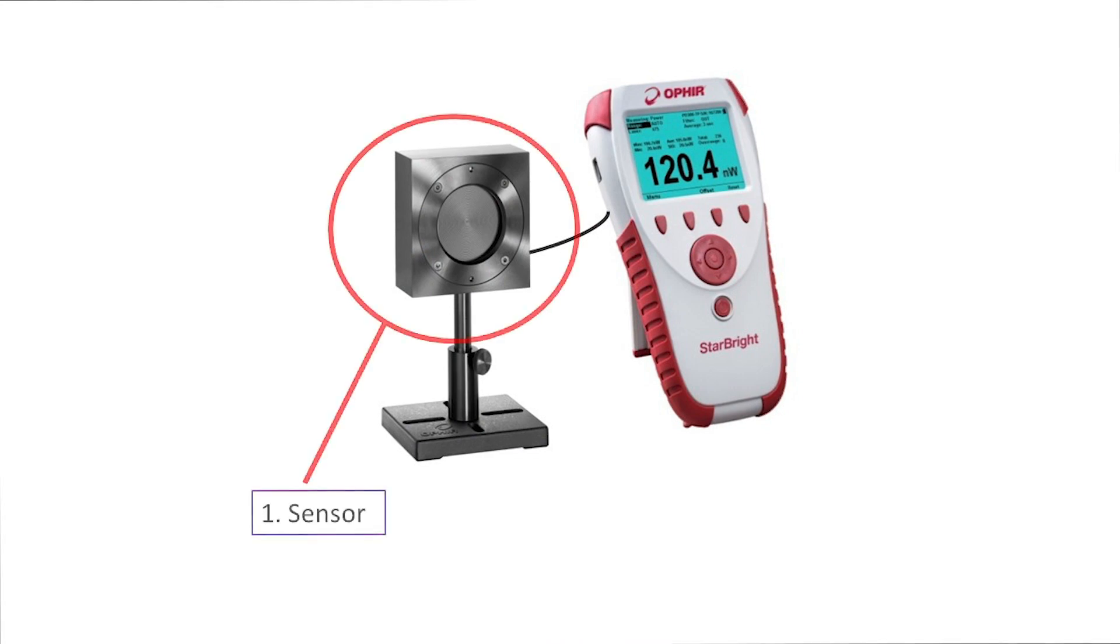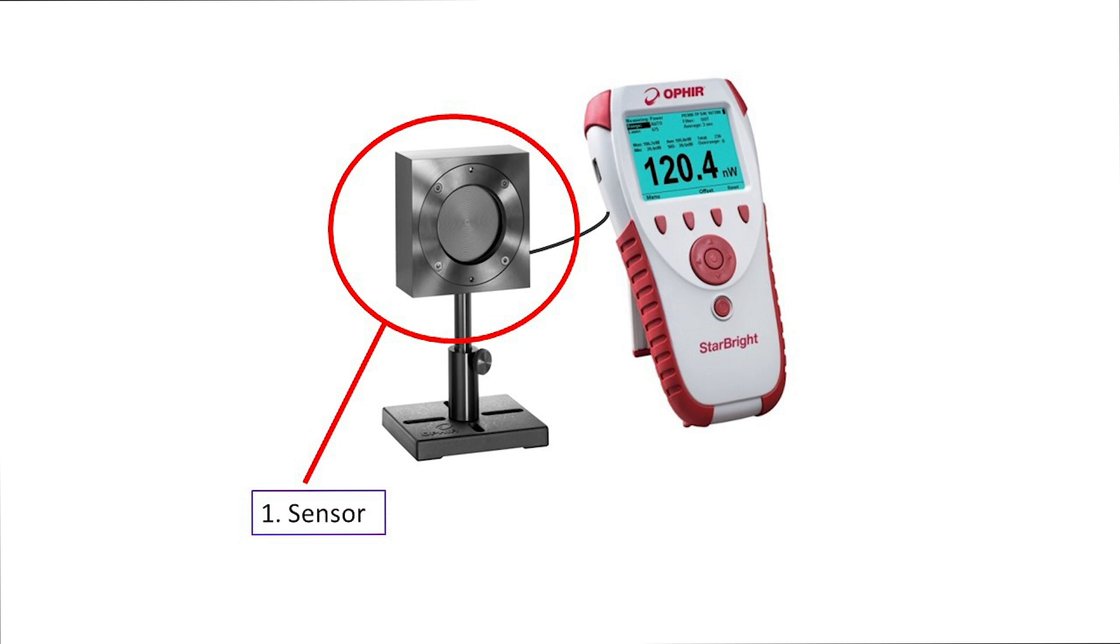It consists of three parts. 1. Sensor, the transducer that receives the laser beam and produces some type of electrical signal that represents the beam's power or energy or whatever parameters we're measuring. We'll just keep using the word power.